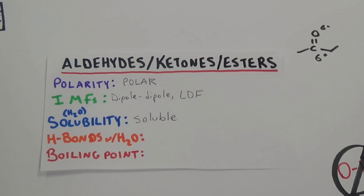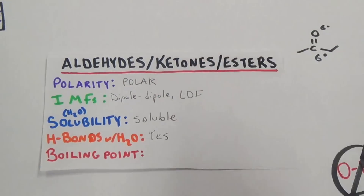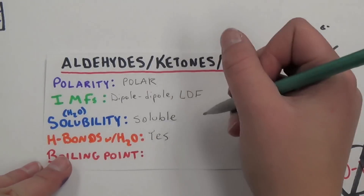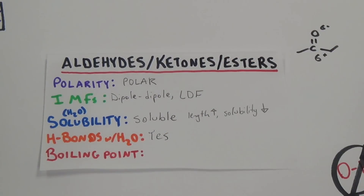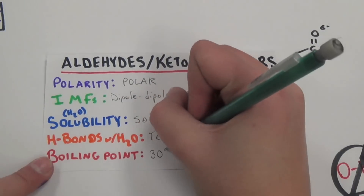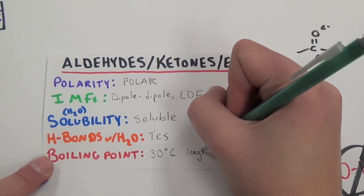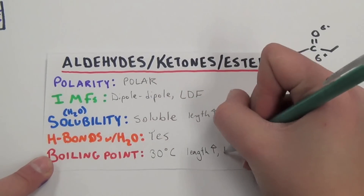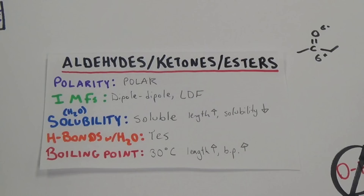Similar to all items on our list, as the length of the carbon chain increases, the molecule's solubility decreases. Because of their inability to hydrogen bond, this group of molecules has a relatively low boiling point. Going along with the previously applied rule, as the length of the carbon chain increases, the boiling point increases.